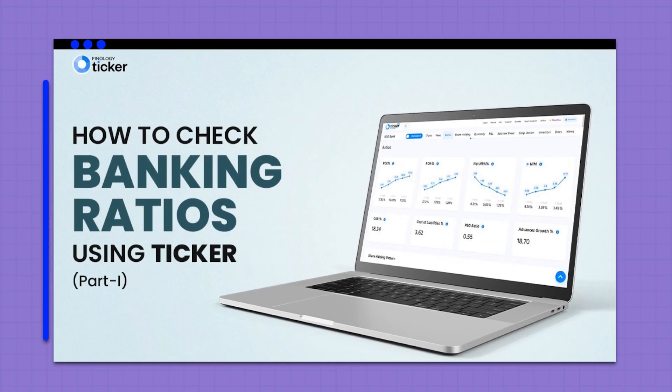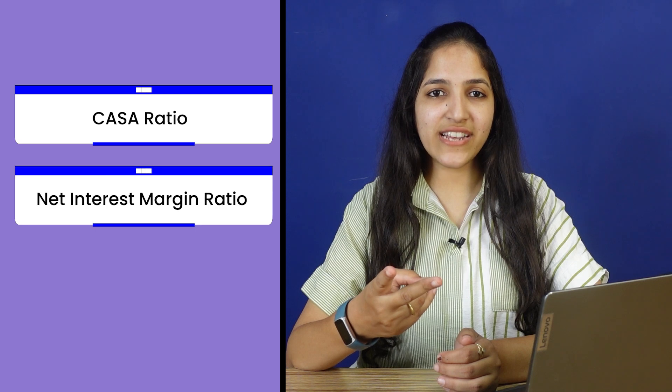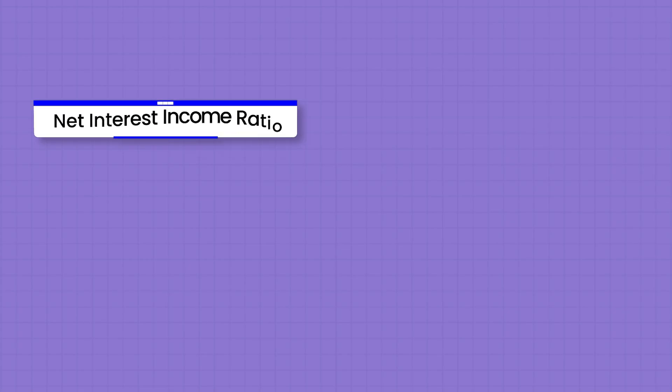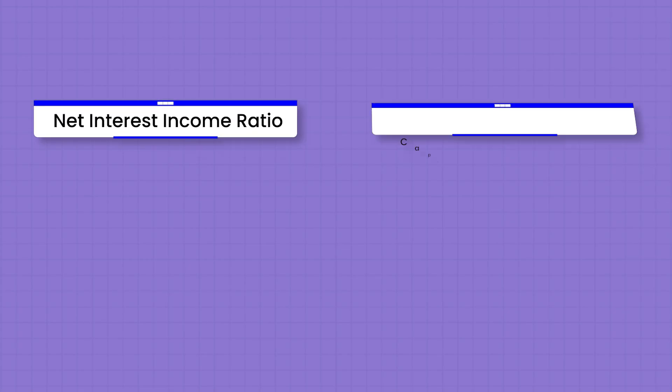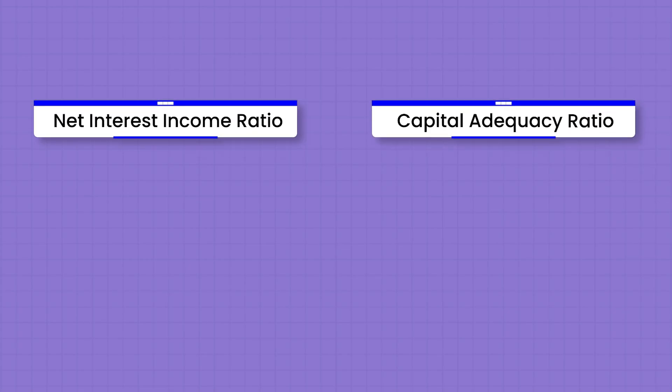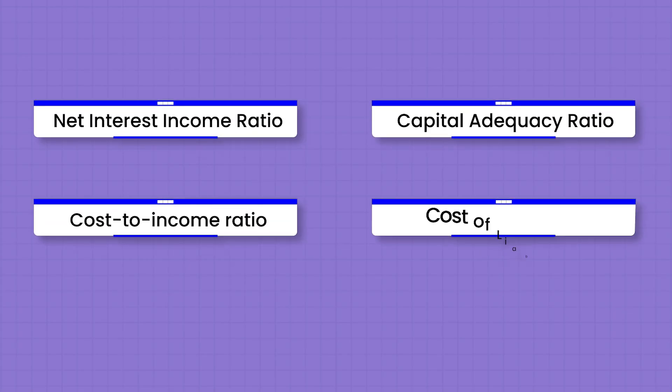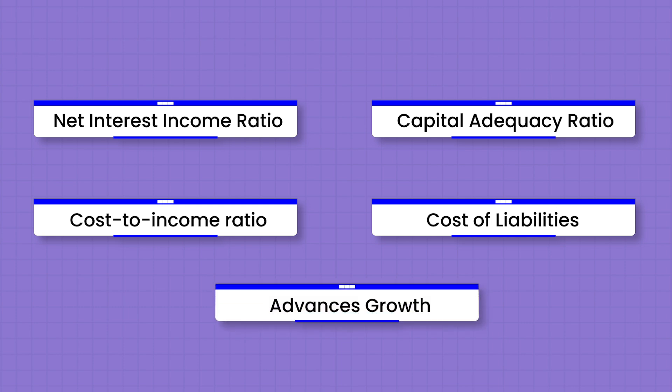In our previous video, we discussed three important banking ratios: the CASA ratio, the net interest margin ratio, and the NPA ratio. There are a few left which we will discuss today. We are going to cover net interest income ratio, capital adequacy ratio, cost to income ratio, cost of liabilities ratio, and advances growth.